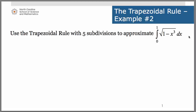Here we want to approximate the integral from 0 to 1 of square root of 1 minus x cubed dx. And we want to do that with five subdivisions. So let's take a look at the graph and what exactly we're trying to do.